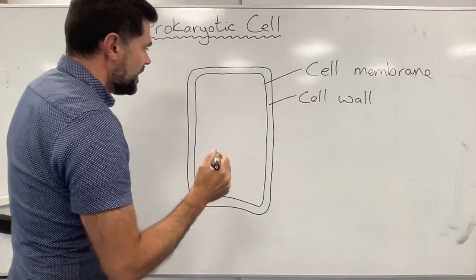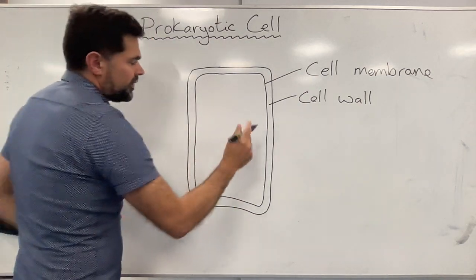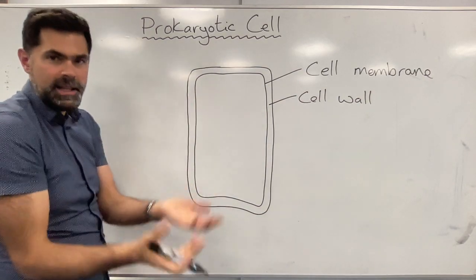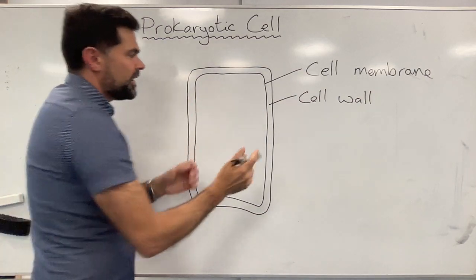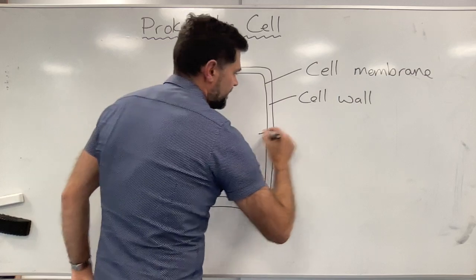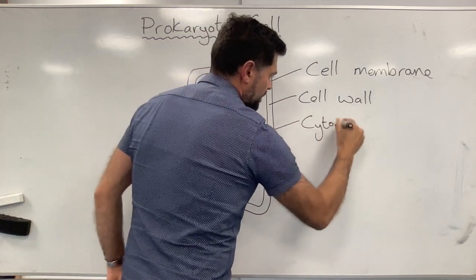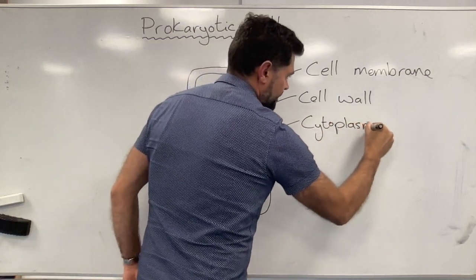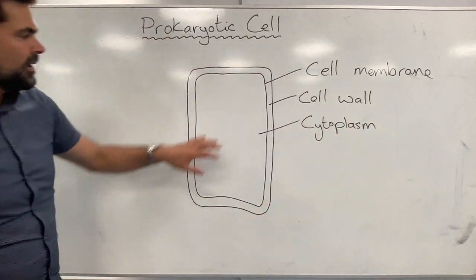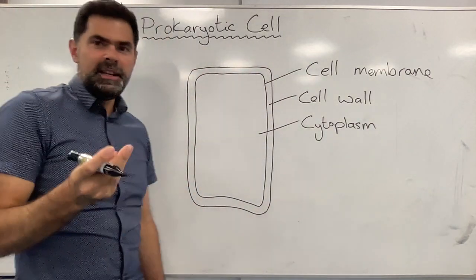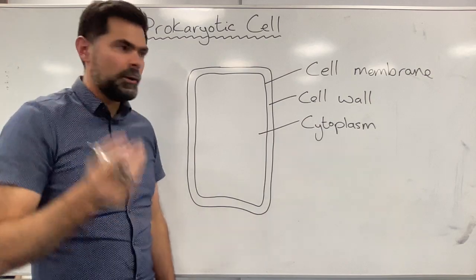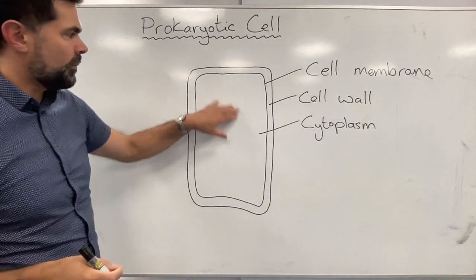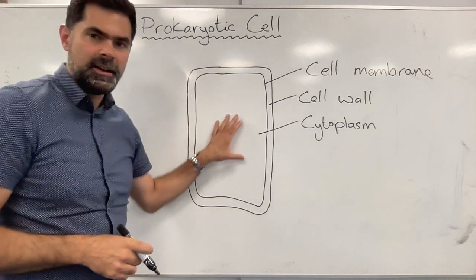Within the cell membrane, the main liquid within the cell that contains lots of other things is the cytoplasm. The cytoplasm is like a jelly, a thick liquid within the cell where all the chemical reactions and things are happening.